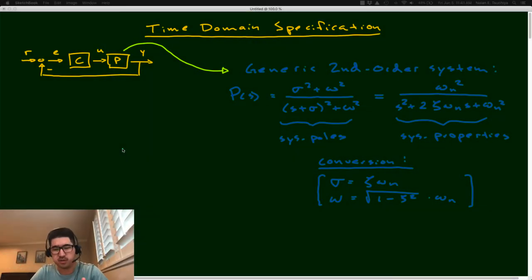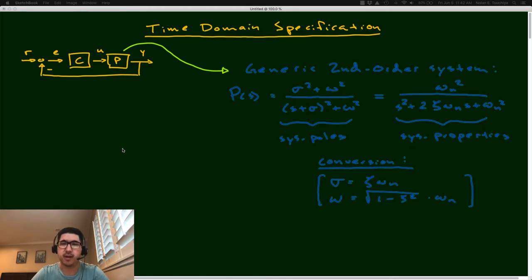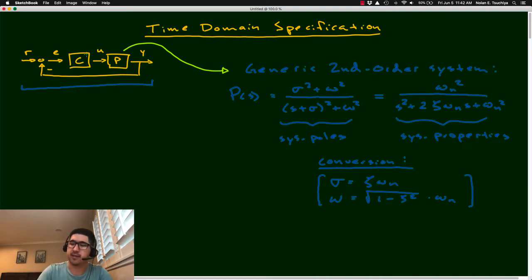Pretty soon, not in this lecture or even the next lecture, but two lectures from now, we are going to formally introduce the idea of feedback control. Everything we're doing up until that point is background on the mathematics and conceptual understanding of the dynamic system — a prerequisite for understanding how feedback control works. This feedback control structure is what's going to allow us to manipulate the closed-loop behavior and change how a particular system behaves based on the controller we design.